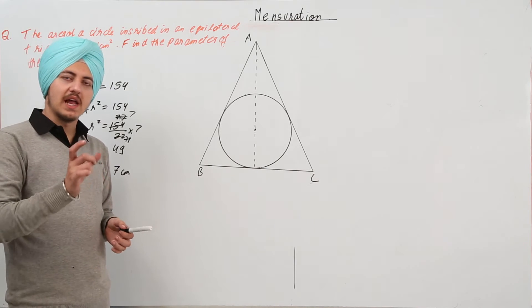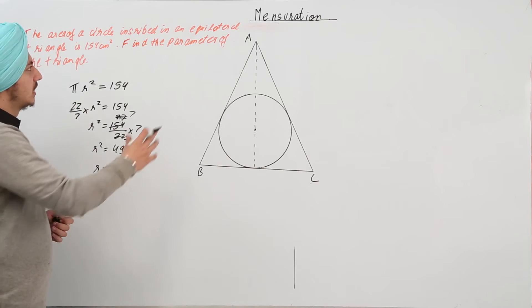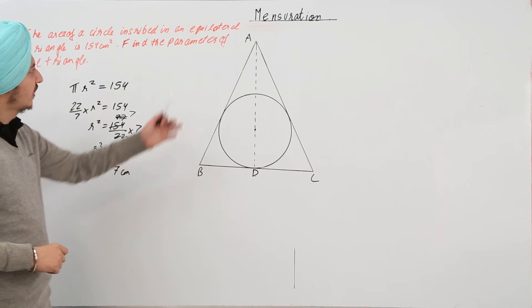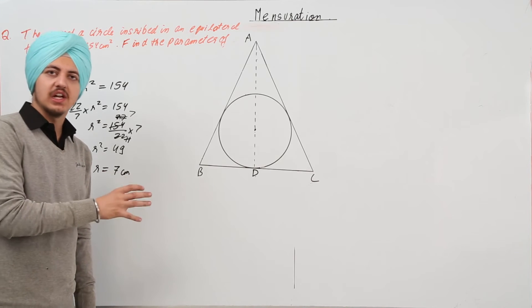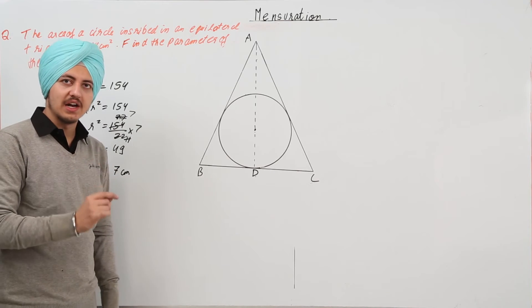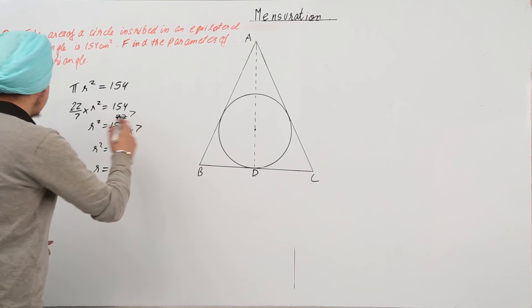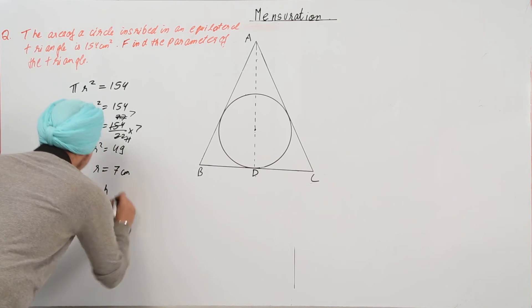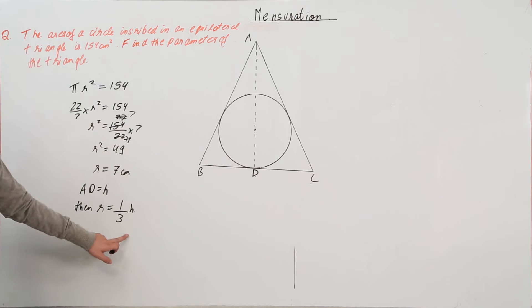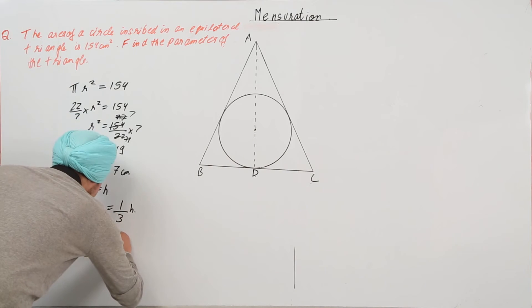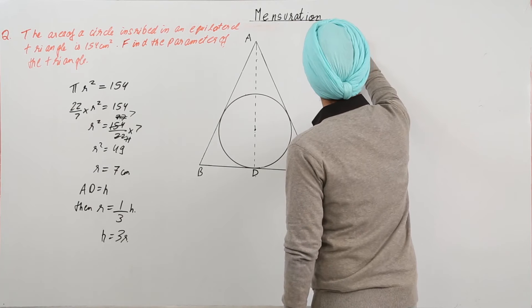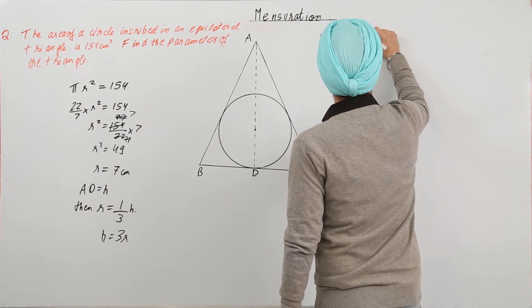We have already done a calculation previously where we found the height AD of the equilateral triangle in terms of the inscribed circle radius. That relationship is r = (1/3) × h, where AD = h. So from here, h = 3r = 3 × 7 = 21 cm.